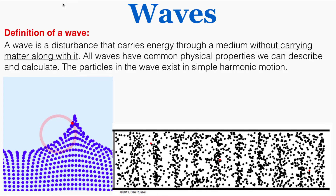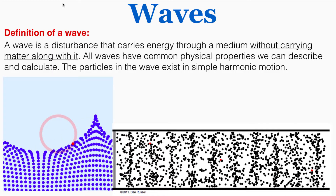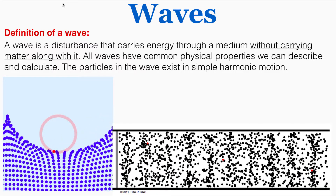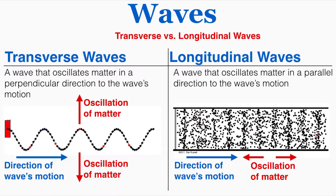It's oscillating back and forth around a point of equilibrium. We're going to talk about this more as we go through the lecture. There are two wave shapes — we can talk about transverse and longitudinal waves.